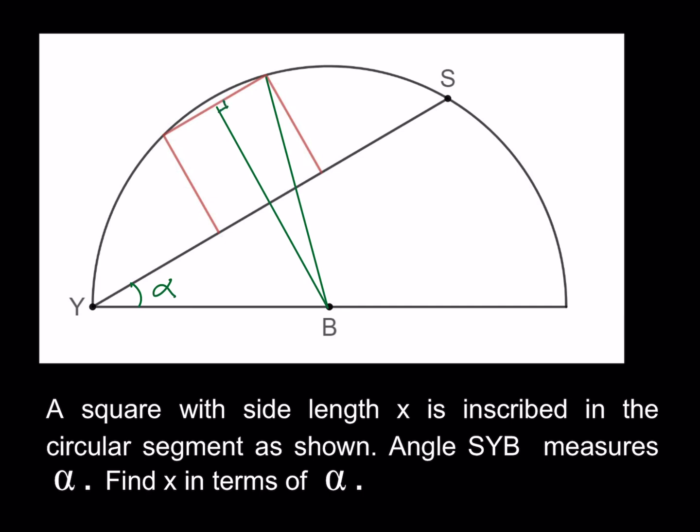Why is that? Because we have a chord, and the segment connecting the center to the chord is perpendicular as long as it passes through the midpoint. Why does it pass through the midpoint? Because of symmetry — there's only one way to inscribe a square in a circular segment, and it has to be perfectly in the middle.